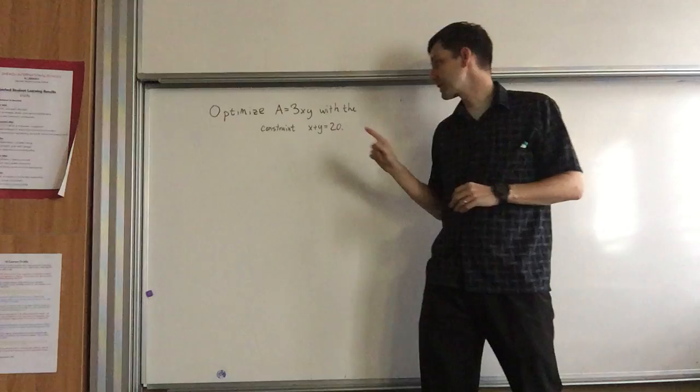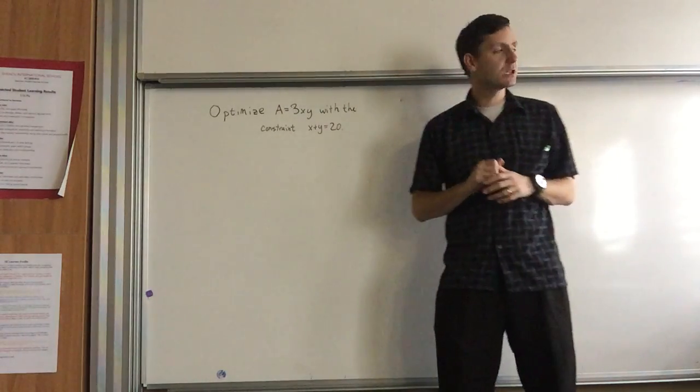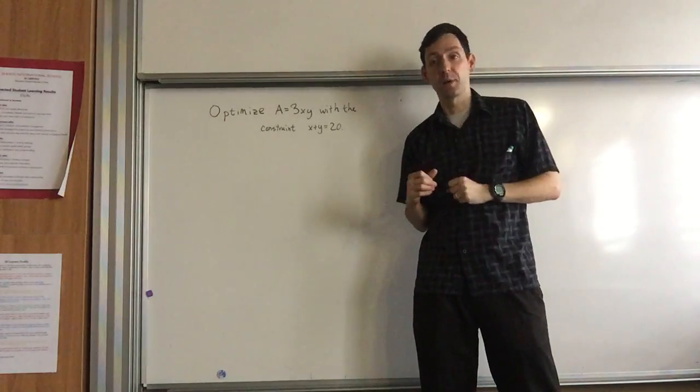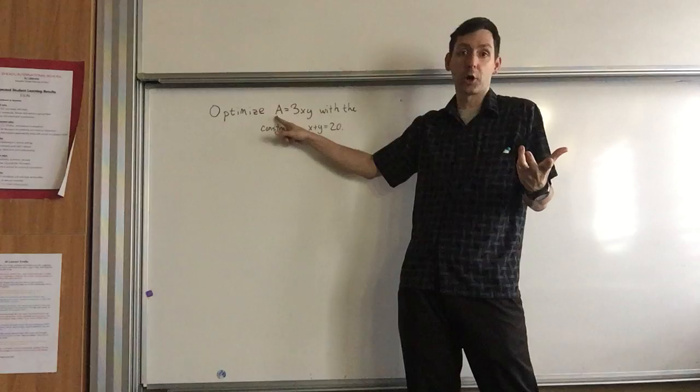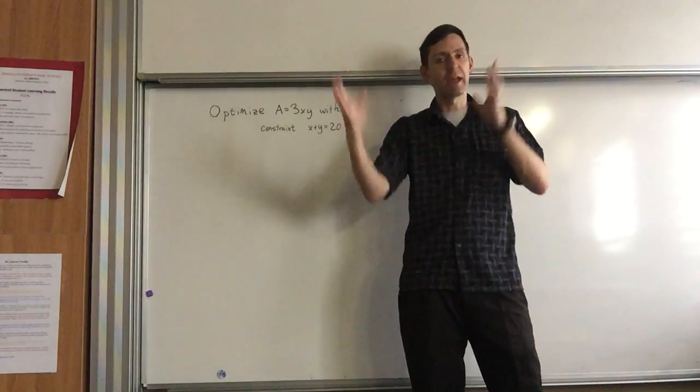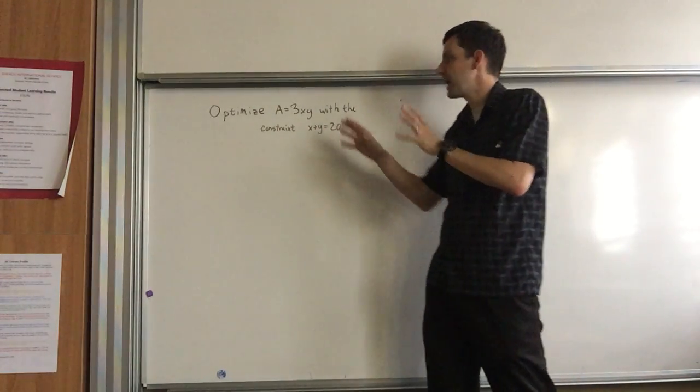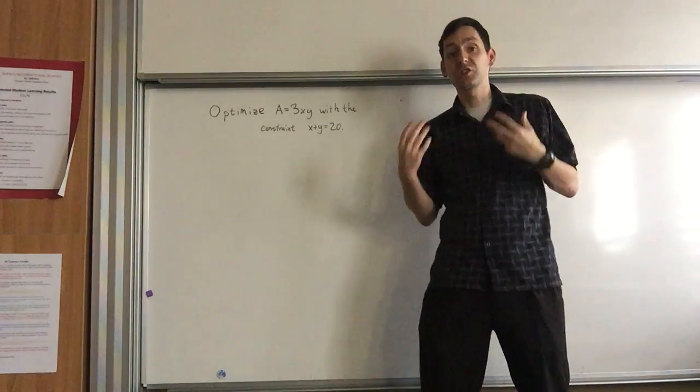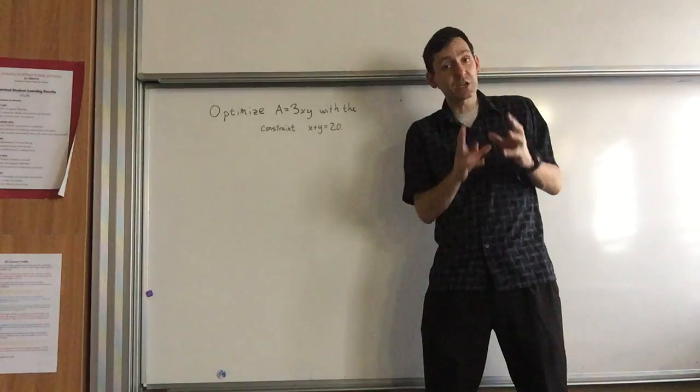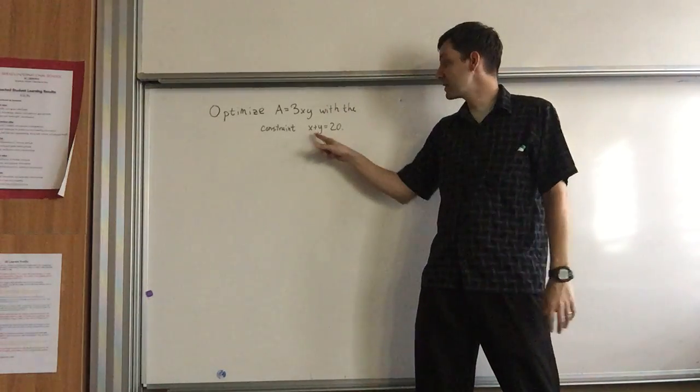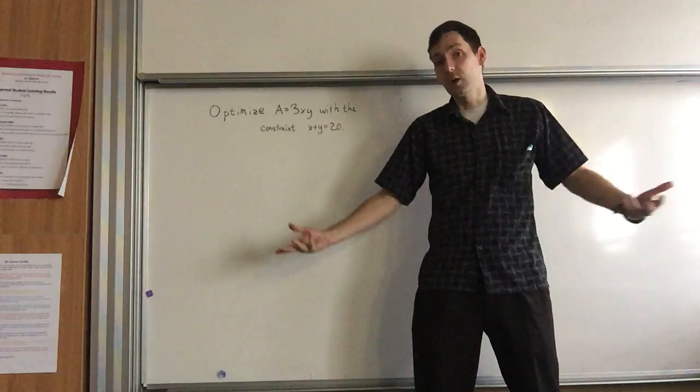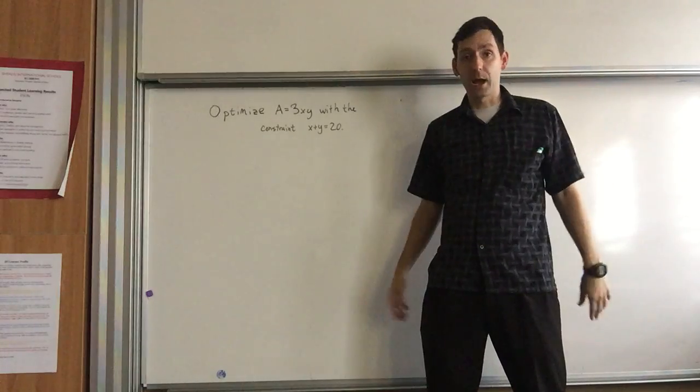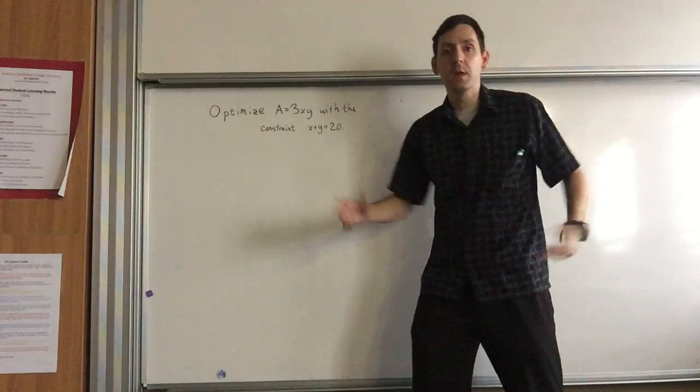We want to optimize A = 3xy with this constraint. Most of the problems that you deal with will look something like this: you'll have one equation with the big thing that you're going to optimize. Here we want to optimize A, which could be area. x and y could be length and width or something like that. So we're going to optimize the area which depends on x and y. We also want to have some kind of constraint. That constraint gives us restrictions on x and y, and the constraint here is that x and y have to equal 20, or maybe x and y at a maximum equals 20 - maybe that's the length of string that you have to go around or the amount of fencing.